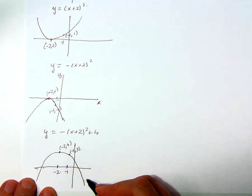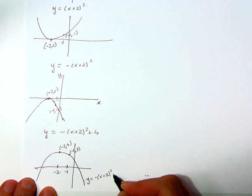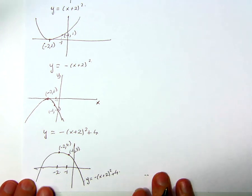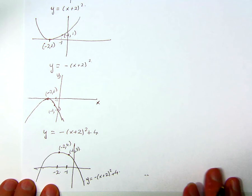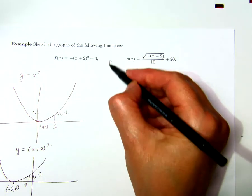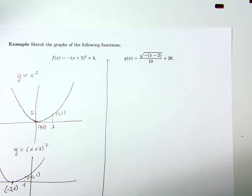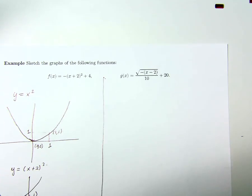So that's finally the graph of y equals negative x plus two squared plus four, and you can add more detail by keeping track of more points. You should obviously try this next one by yourself, and then have a look at the solution.